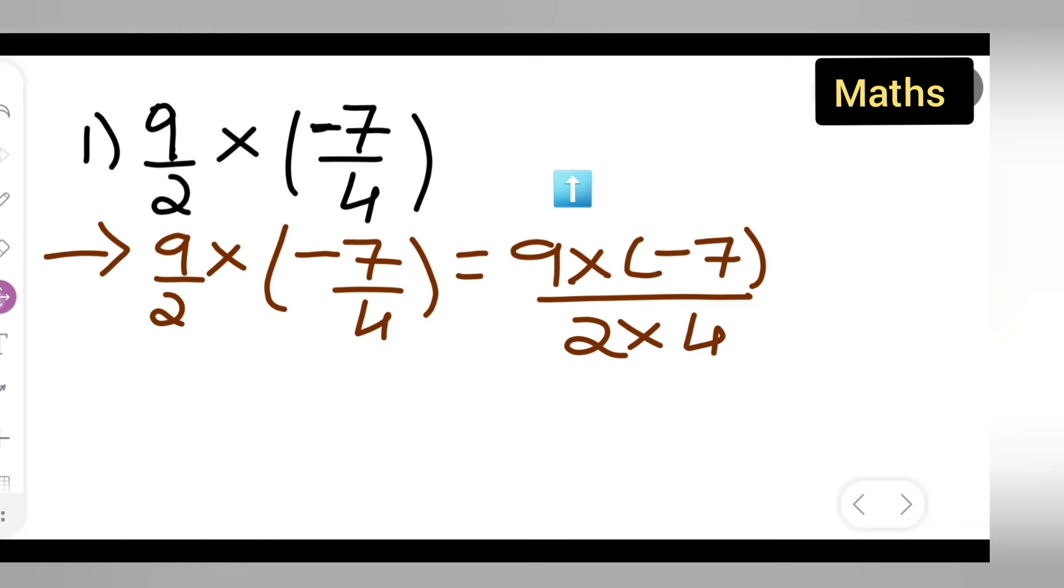So what I have done over here is I have written this as it is over here. Then 9 multiplied by minus 7 upon 2 multiplied by 4. We need to multiply this right. Now 9 times 7 is 63. So while writing I will have to write down minus 63 because the sign is minus right.